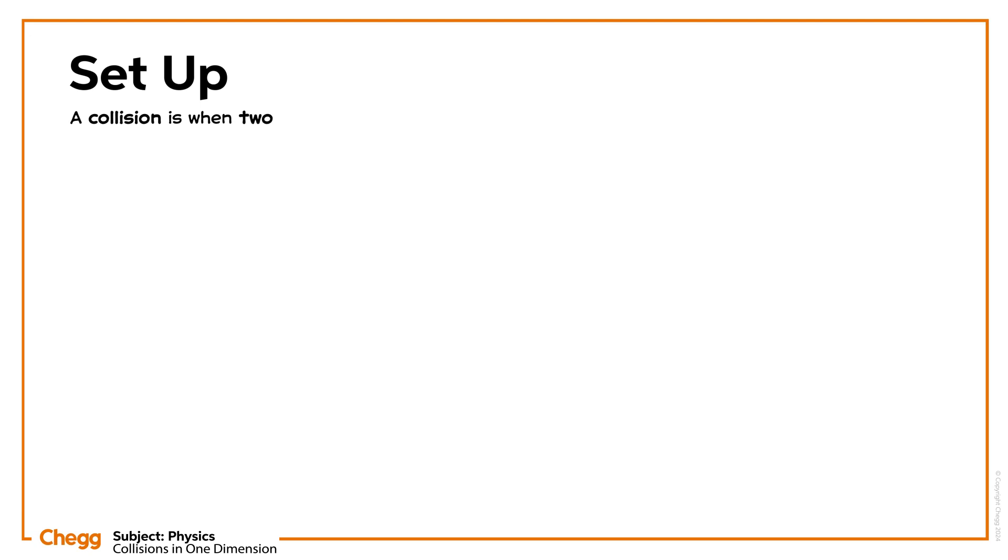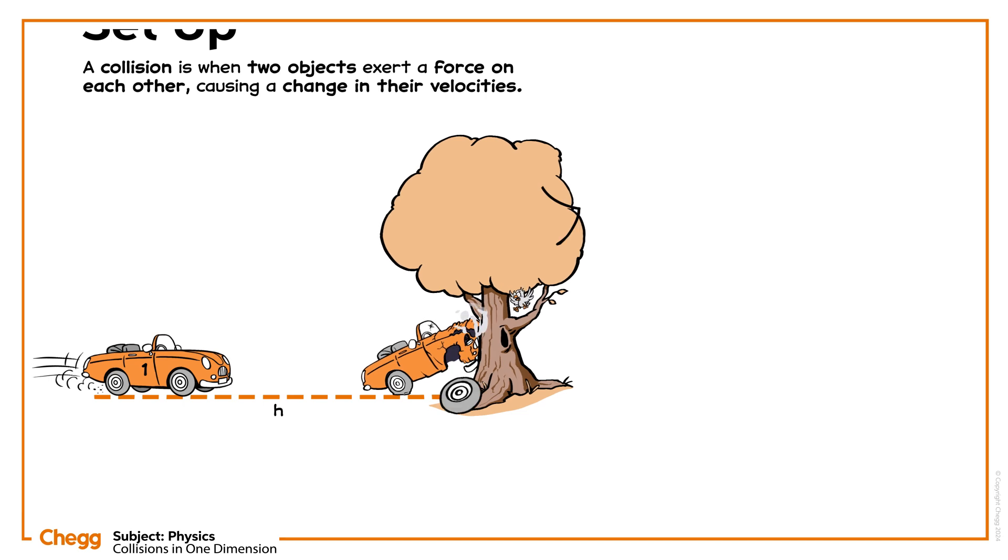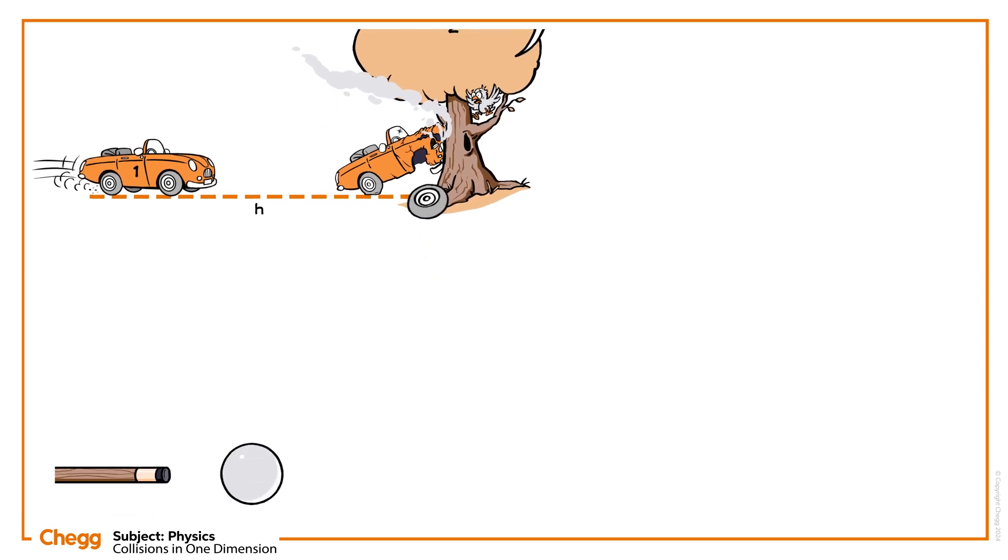A collision is when two objects exert a force on each other, causing a change in their velocities, say a car bashing into a tree, or one snooker ball hitting another.